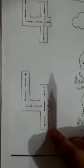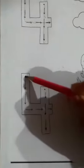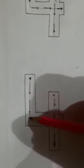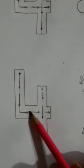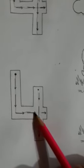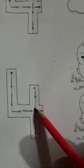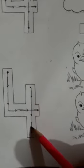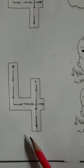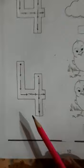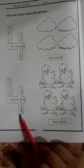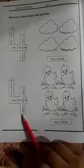Again trace it. Start from the big dot. 4 is like a sitting on a chair. 4. Which number is this? 4.